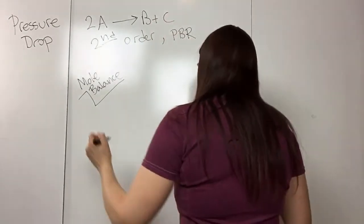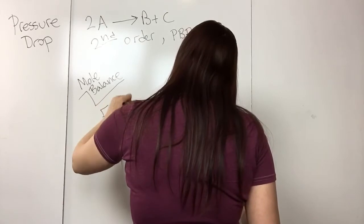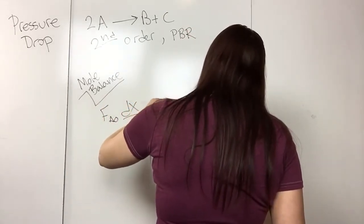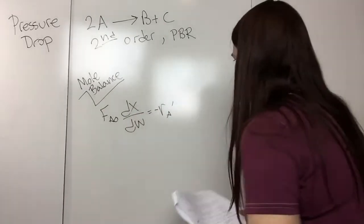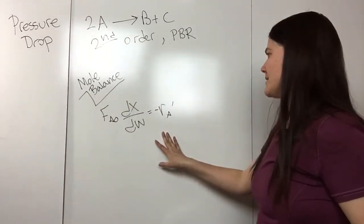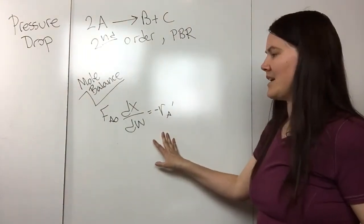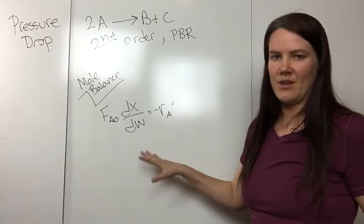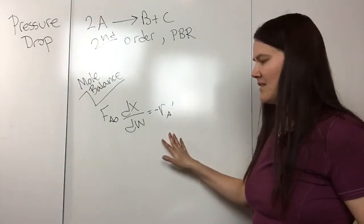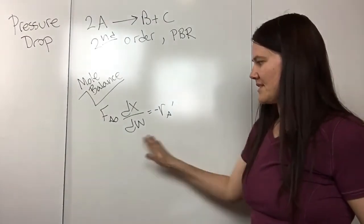The mole balance for a packed bed reactor is F_A0 dX/dW = −r_A'. One thing to keep in mind: we have to use the differential form of the mole balance if we have a pressure drop. Or if it's not isothermal, then you also have to use the differential form.